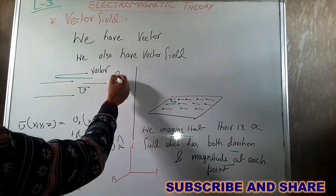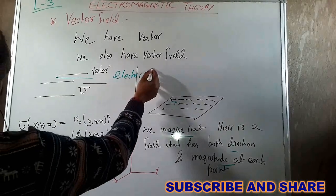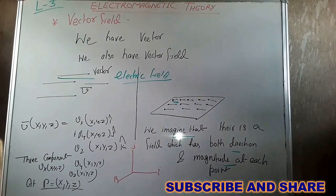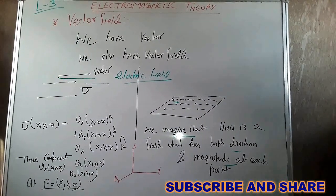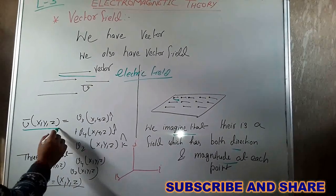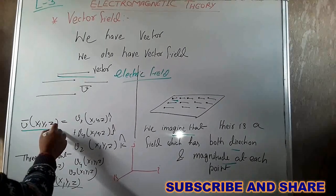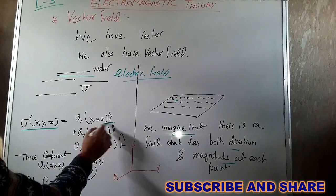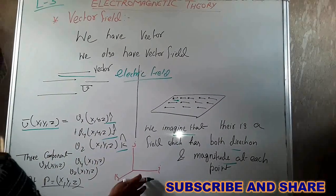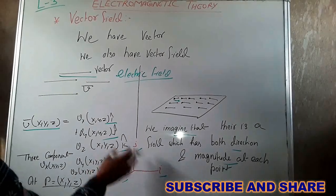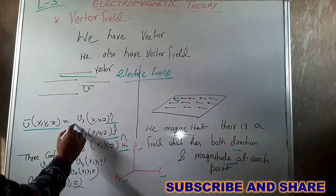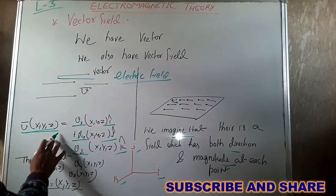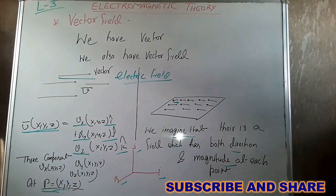Just like the electric field, a vector field assigns a value to each point in space. Suppose V(x,y,z) is the vector field. It means this vector field has some component along the i, j, k axes — that is, along the x, y, z coordinate system. So vx, vy, and vz are the three components of the vector field V(x,y,z) at point P.